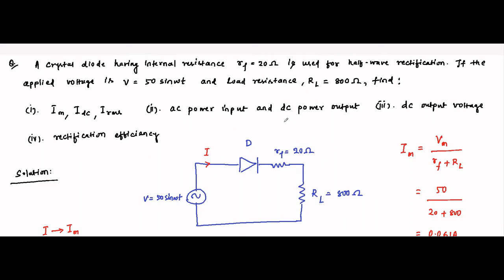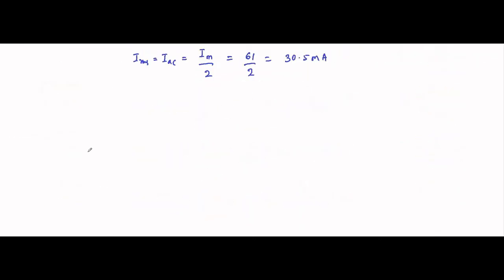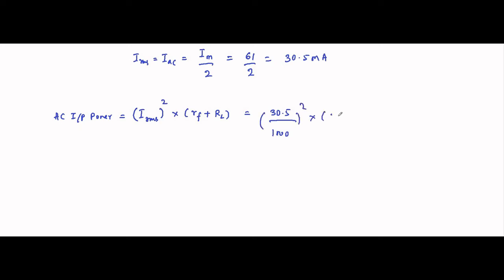Next, the AC power input involves the RMS value of the current: PAC = I²rms × (RF + RL). Here, Irms = 30.5 mA = 0.0305 A, RF = 20 ohms, RL = 800 ohms. So PAC = (0.0305)² × (820) ≈ 0.763 watts.